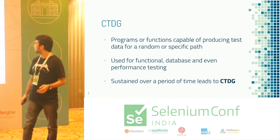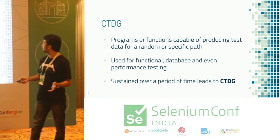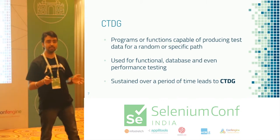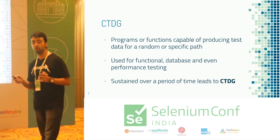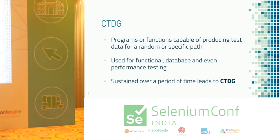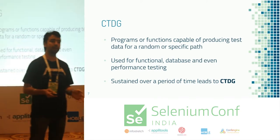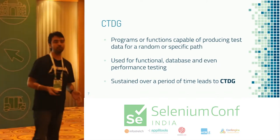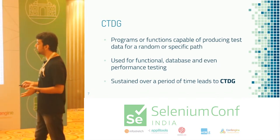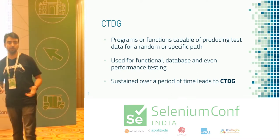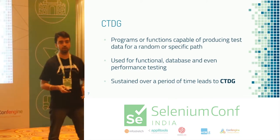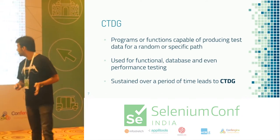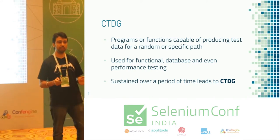Going by the formal definition, test data generators are programs or functions capable of producing test data for a random or specific attribute. When you say specific, you need to know your application to generate more coverage and depth. You can run them for functional testing, database testing — say when you populate a new database with a new table with address fields. When these test data generators are sustained over a period of time, we name them continuous test data generators.